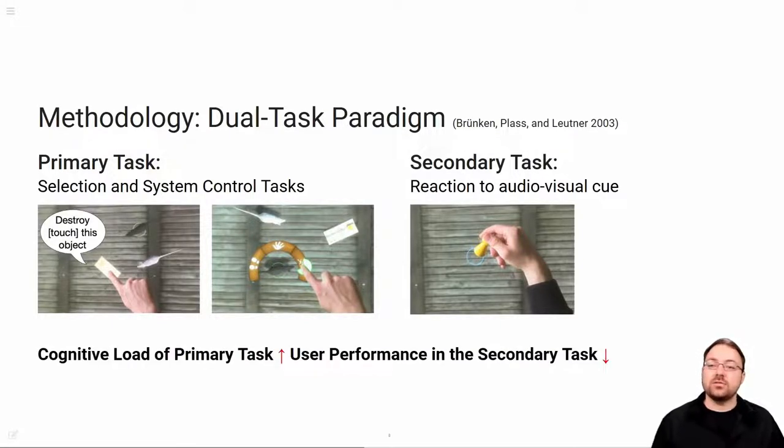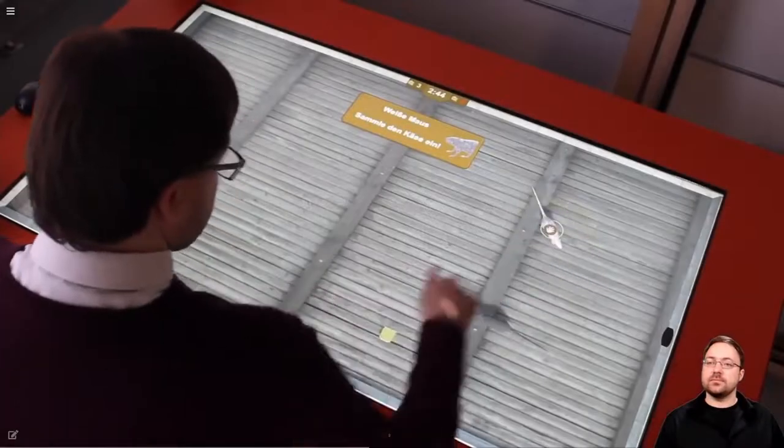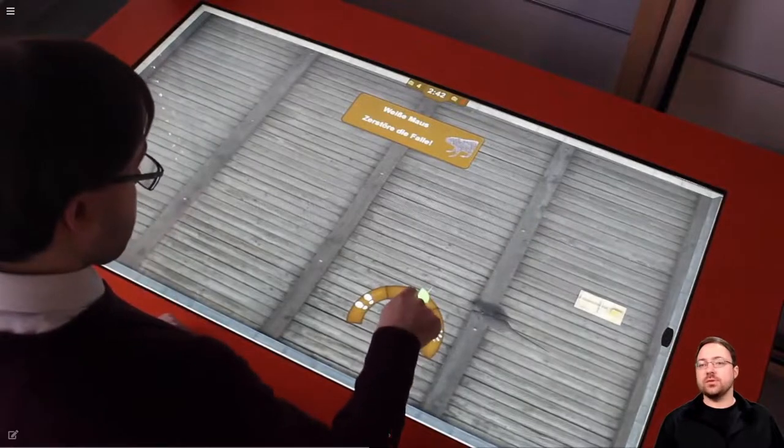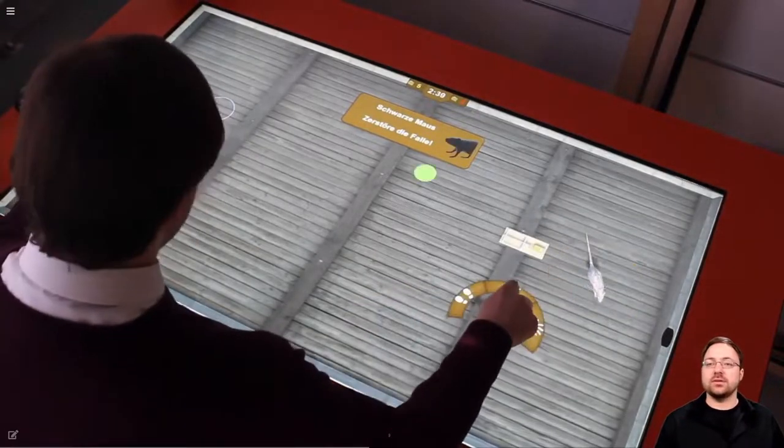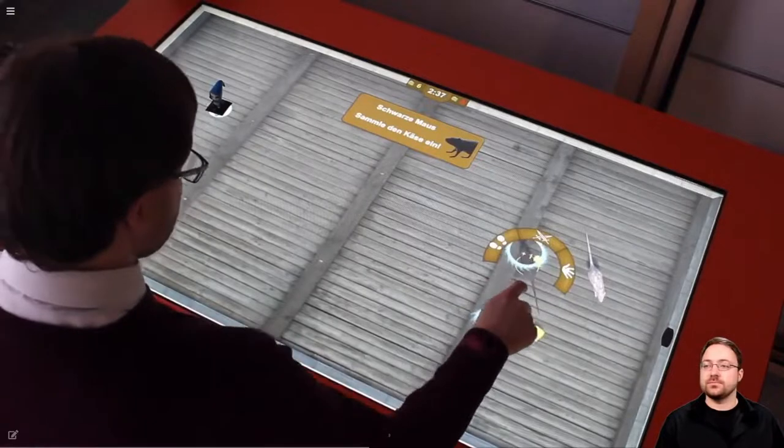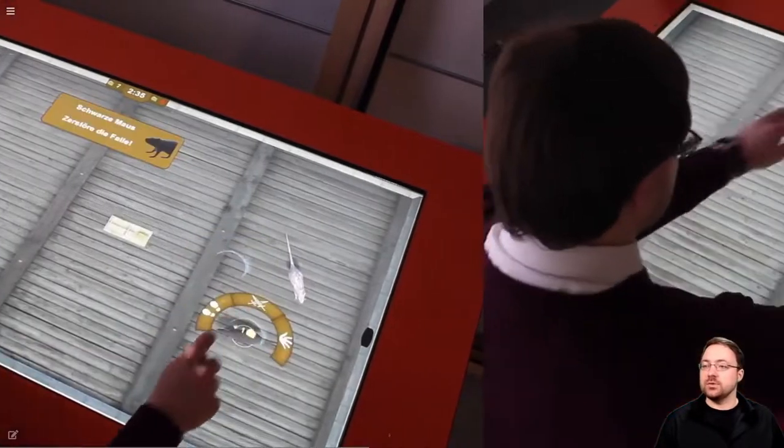Here you see the primary task with the unimodal interface on the right and the secondary task on the left. Next you see the multimodal interface.